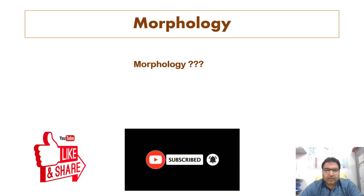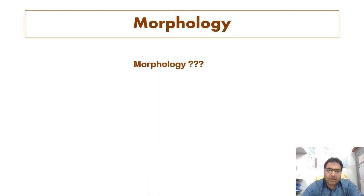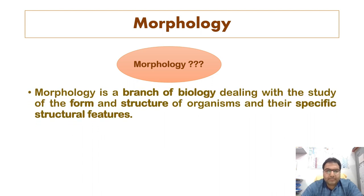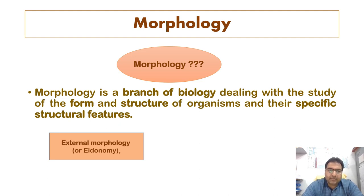Before knowing the morphometric characters, we should have knowledge about morphology. Morphology is basically a branch of biology which deals with the study of the form and structure of organisms and their specific structural features. This includes the aspects of the outward appearance, shape, structure, color, pattern, and size. This is all what we call external morphology.